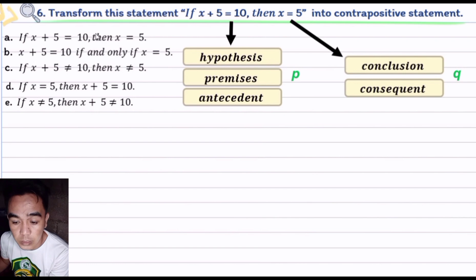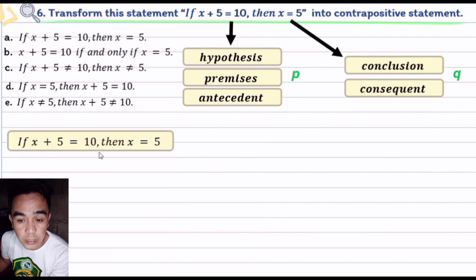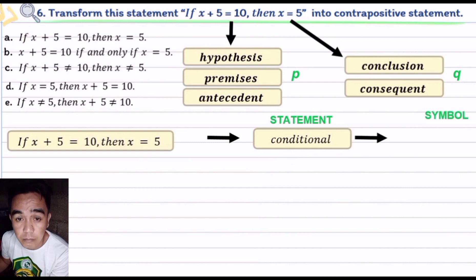Let us now determine each type, names, and symbol of each option. Option a: if x plus 5 equals 10 then x equals 5. This is the original statement. If you put the word 'if' and 'then' to the original statements, we call it a conditional statement. In symbol we have p then q, since x plus 5 equals 10 is p and x equals 5 is q. In symbol, p arrow q, or read as p then q.